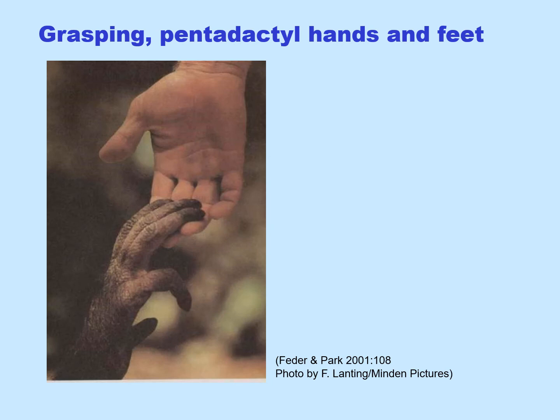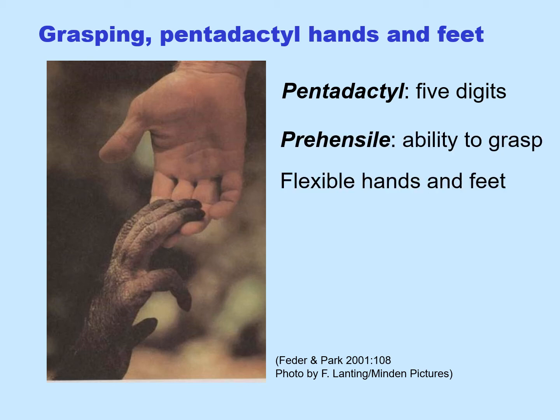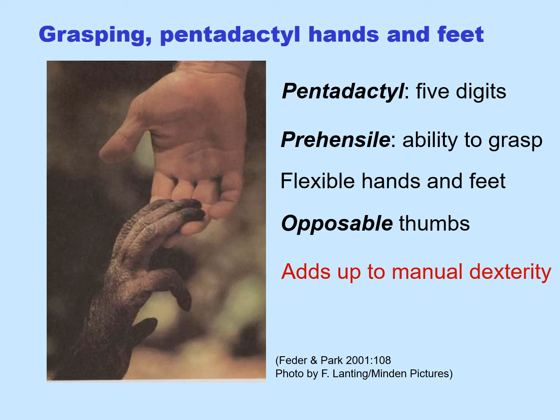What do we mean by grasping pentadactyl hands and feet? Pentadactyl refers to five digits. If you pull the word apart: penta means five, as in pentagrams; dactyl refers to digits — five digits. Prehensile means the ability to grasp. Put these together and we have flexible hands and feet, opposable thumbs, and all of this adds up to manual dexterity.